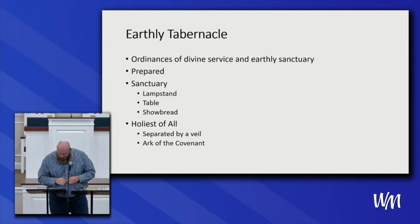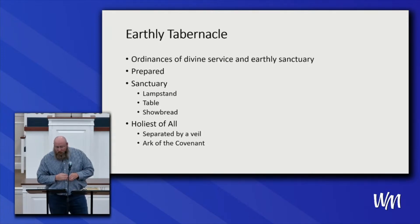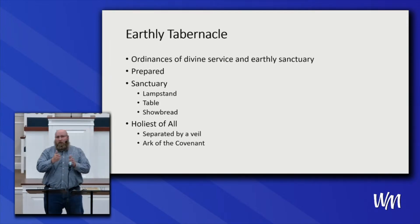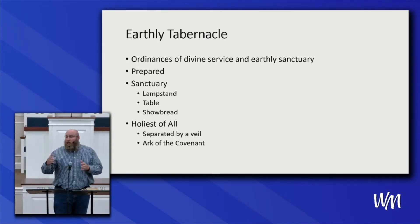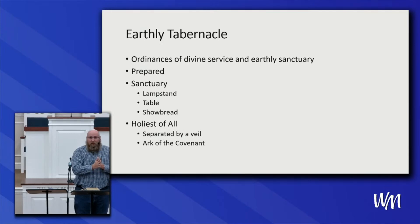Inside the sanctuary was the lampstand, the table, and the showbread. Behind the second veil — the holiest of holies — was the golden censer and the Ark of the Covenant overlaid with gold, containing the golden pot of manna, Aaron's rod that budded, and tablets of the covenant. The veil that separated the sanctuary from the holiest of all represented the separation between God and man. When man sinned, we were separated from God. Through Christ's sacrifice, the veil was ripped and he became our mediator, allowing us to go to God through Jesus.